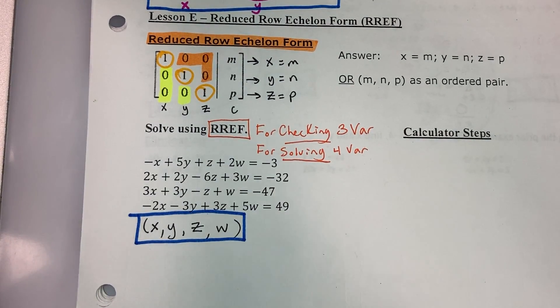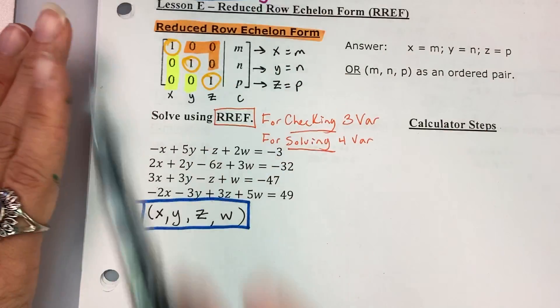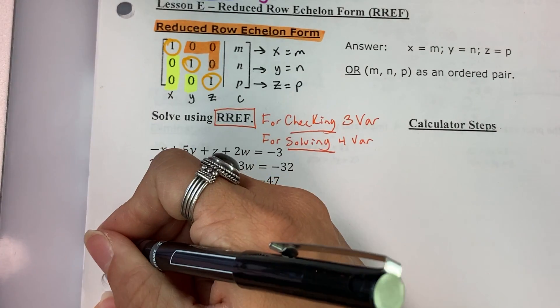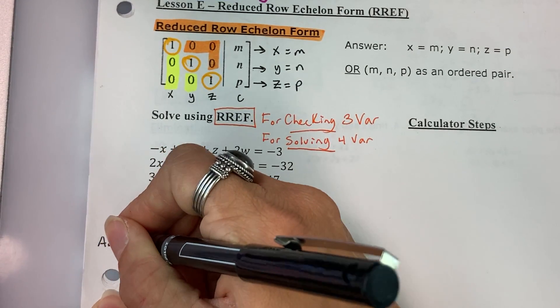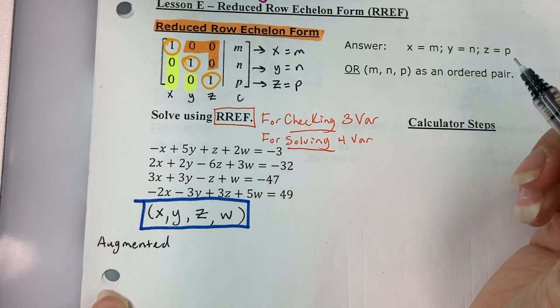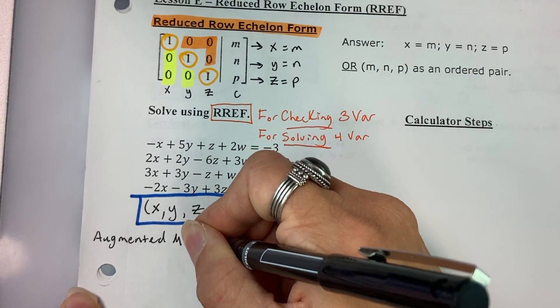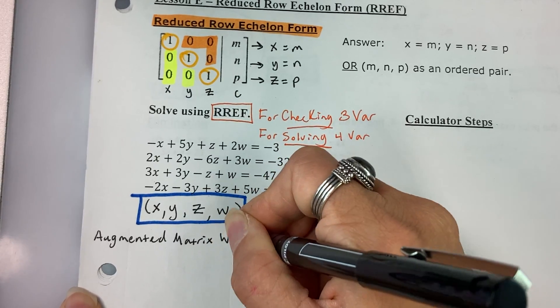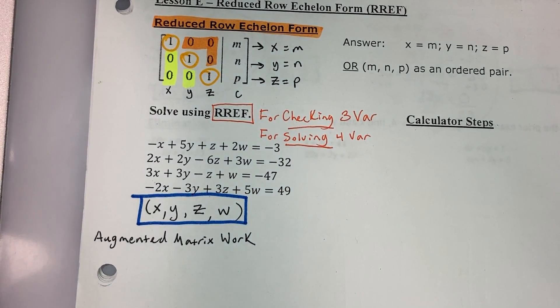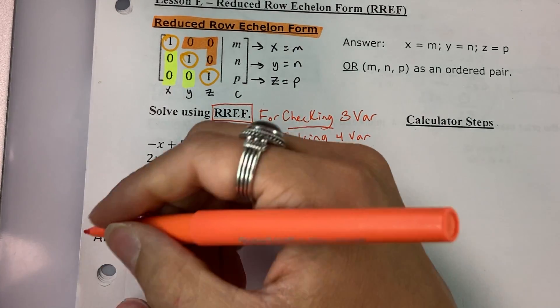The first thing we are going to do with this problem is actually the same as what we did when we did these problems by hand, which is we need to turn this into an augmented matrix. And on your homework, I am going to require, even on these four variable calculator ones, that you show that augmented matrix work.